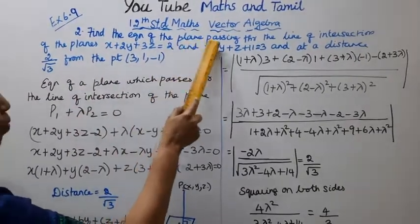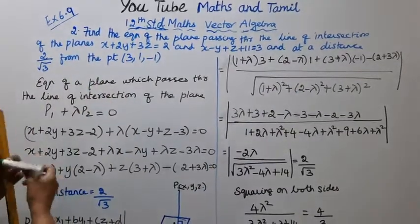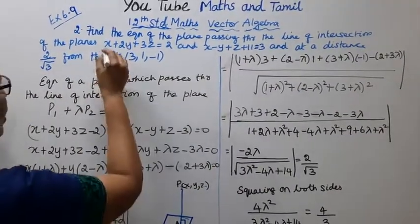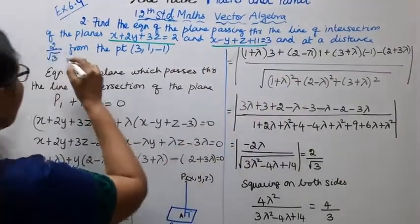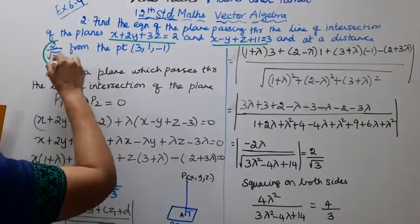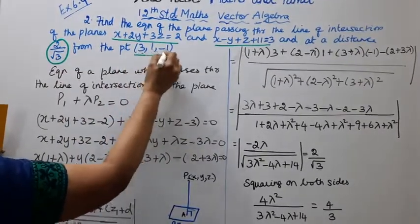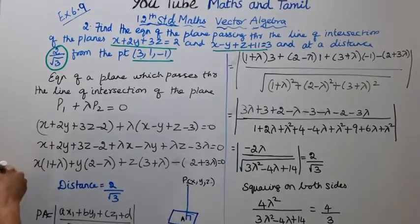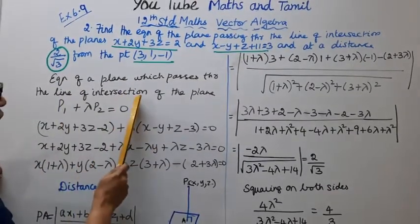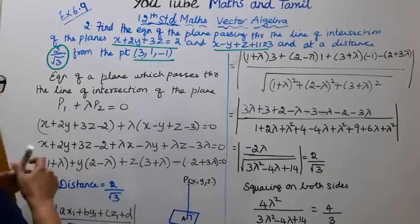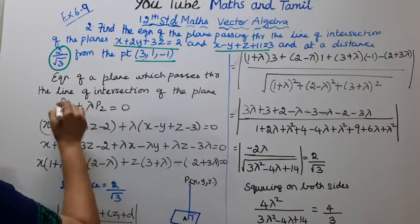Find the equation of the plane passing through the line of intersection of the planes. This plane is at a distance 2 by root 3 from the point (3, 1, -1). The equation of a plane which passes through the line of intersection is plane 1 plus lambda times plane 2 equal to 0.